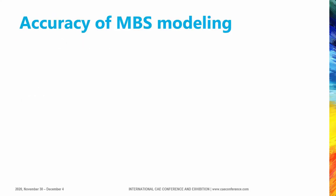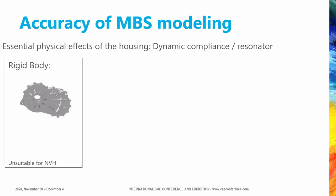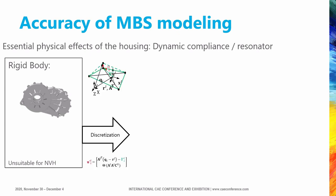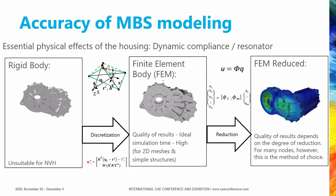Let's look at the components of a multi-body system to fulfill the requirements of an NVH simulation. We start with the housing, which mainly provides static and dynamic compliance and also serves as a resonator. The rigid body description of a classical MBS is not suitable for NVH simulations, so we transform the rigid body into a finite element body using mesh discretization. A classical approach to solve the large simulation time is to transform the finite element body into a modal space; for complex housing this modal approach is recommended.